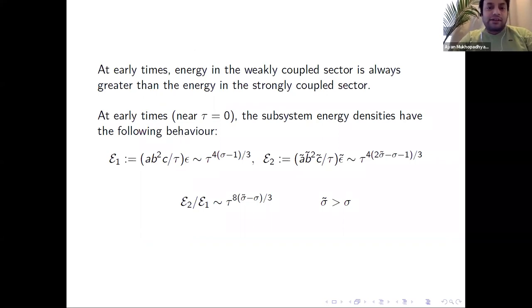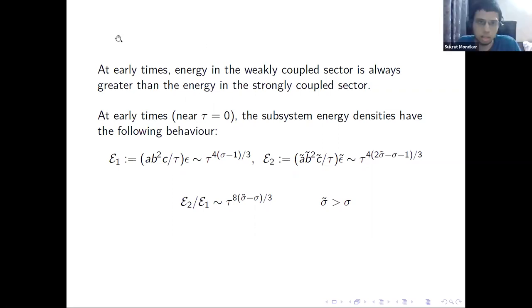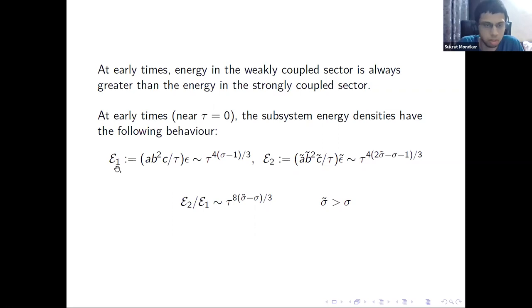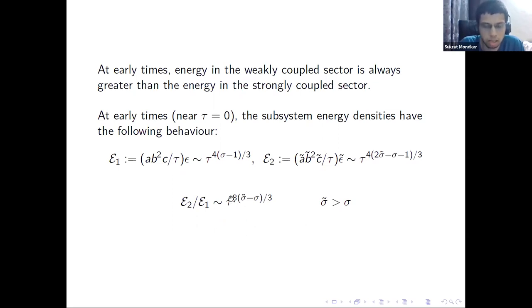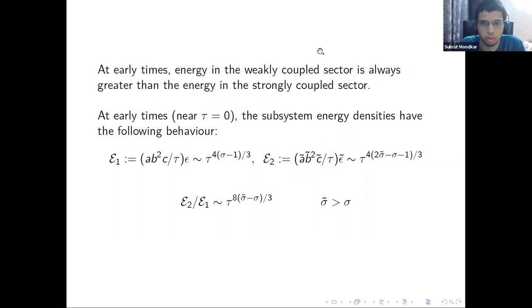This is true only on the attractor. For the attractor solution, the energy in the weakly coupled sector is always greater than the energy in the strongly coupled sector. This can be seen analytically: near tau=0, the energy densities have certain tau-dependences, and the ratio epsilon_2/epsilon_1 goes to zero as tau goes to zero — since sigma-tilde > sigma, the exponent is positive, meaning epsilon_1 (weak sector) always dominates. As the system evolves, the weakly coupled sector transfers its energy to the strongly coupled sector.